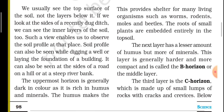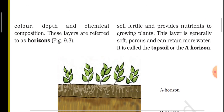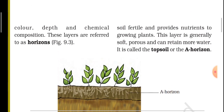It can also be seen at the side of a road on a hill or at a steep river bank. The uppermost horizon is generally dark in color as it is rich in humus and minerals. The humus makes the soil fertile and provides nutrients to growing plants. This layer is generally soft, porous, and can retain more water. It is called topsoil or the A horizon.